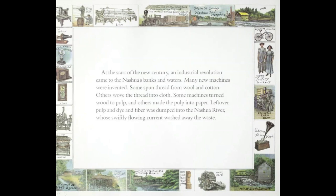At the start of the new century, an industrial revolution came to the Nashua's banks and waters. Many new machines were invented. Some spun thread from wool and cotton; others wove the thread into cloth. Some machines turned wood to pulp — and pulp is a mixture of ground-up wood, water, and other matter used to make paper — and others made the pulp into paper. Leftover pulp and dye — and dye is a substance used to color cloth or paper — and fiber was dumped into the Nashua River, whose swiftly flowing current washed away the waste.